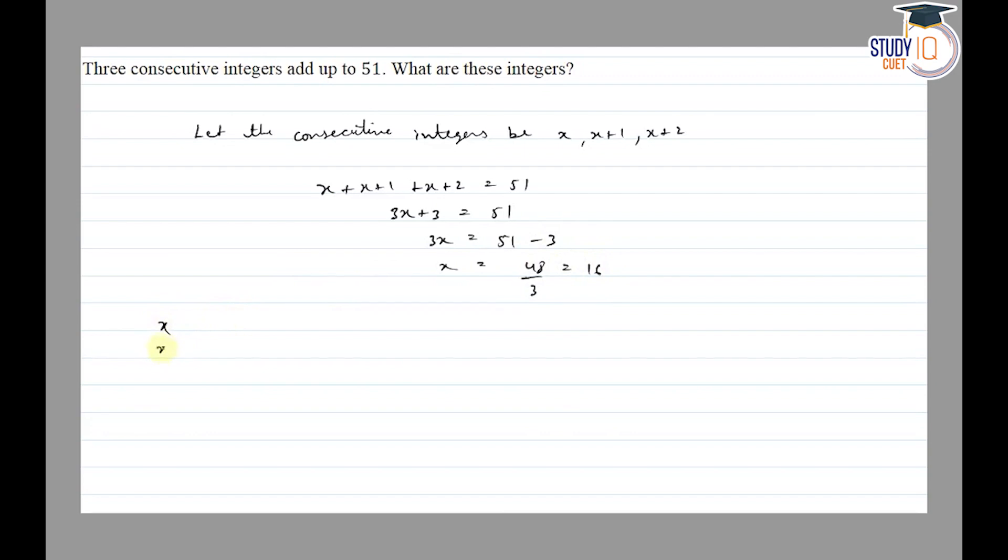16, 16+1, and 16+2, which equals 16, 17, and 18. These are the three consecutive numbers. Thank you.